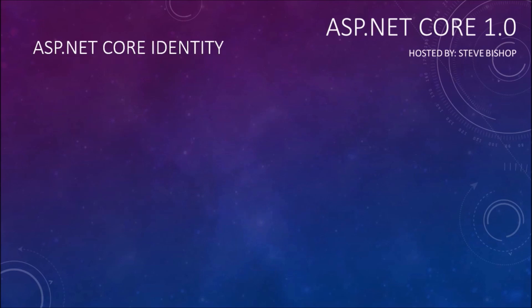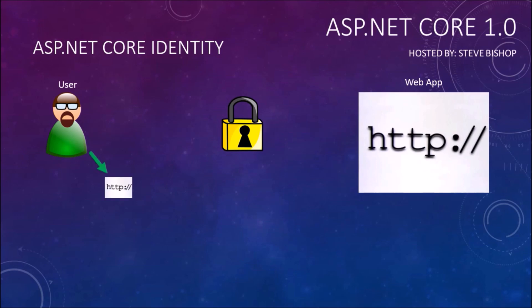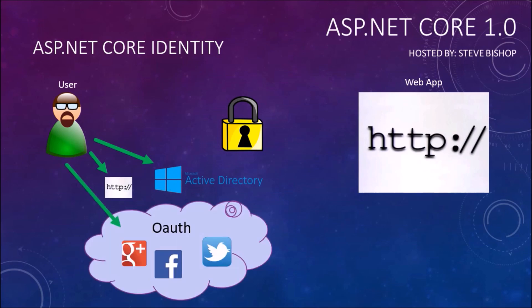Say for example you have your user and a web application. Before that user tries to access your web application, you would like to put some sort of security system in place to make sure that that user should be able to access your application. The user can go ask another area of your application — maybe a special section specifically designed to help authenticate the user — or they can authenticate themselves through Active Directory or a domain controller. There's also the possibility that they use OAuth or a third-party authentication service like Google Plus, Facebook, or Twitter.